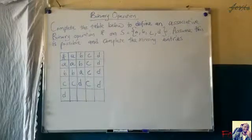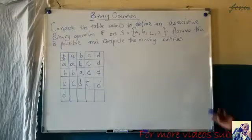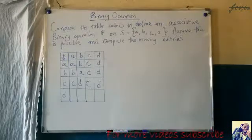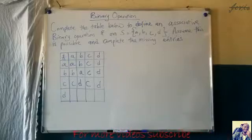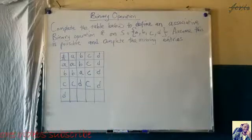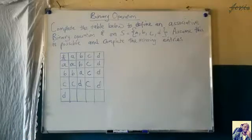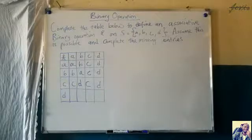Welcome. In this video, I want to use a binary operation — specifically an associative binary operation — to complete a table. The question we need to tackle is: complete the table below to define an associative binary operation on S, a set of {A, B, C, D}, assuming this is possible, and complete the missing entries.